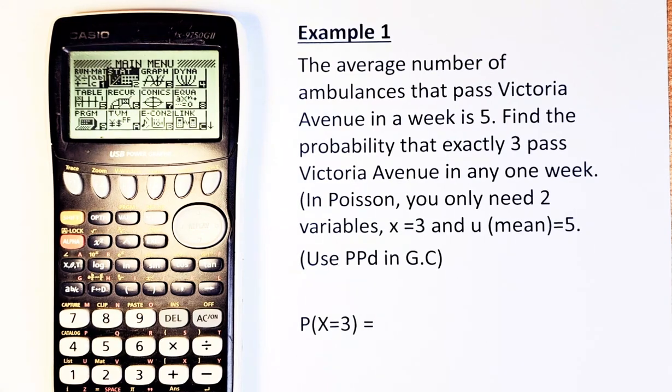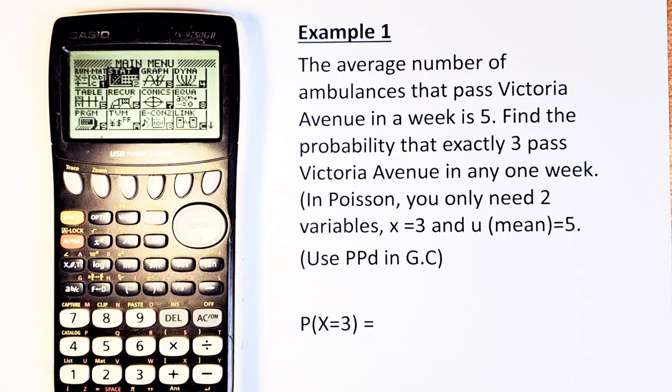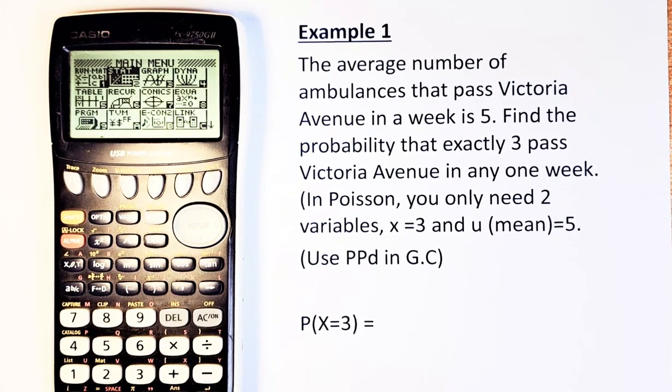So the question is, the average number of ambulances that pass through Victoria Avenue in a week is 5, so lambda or μ is 5. Find the probability that exactly 3 pass through Victoria Avenue in one week. So x = 3, because that's what they're asking you, exactly 3 passes through Victoria Avenue every week.